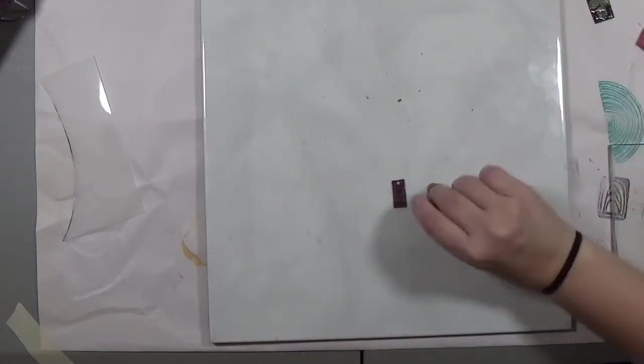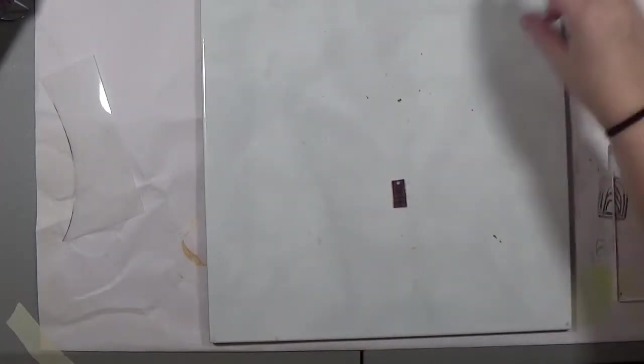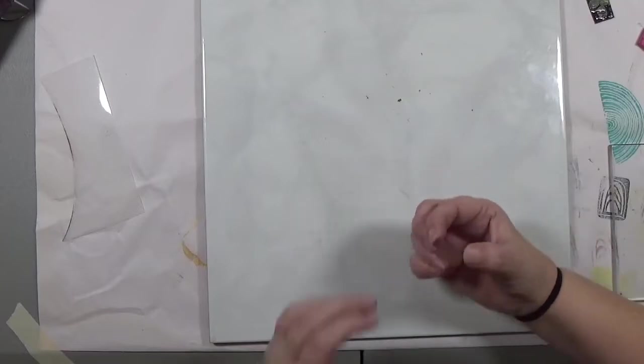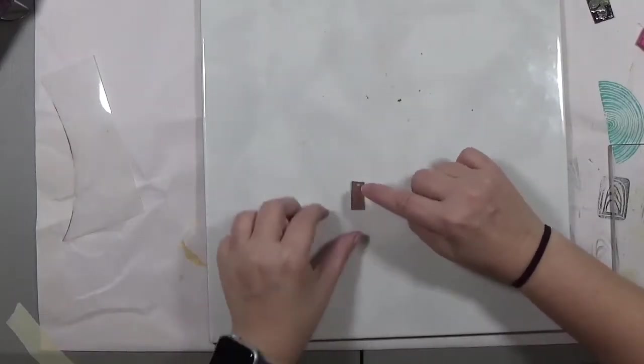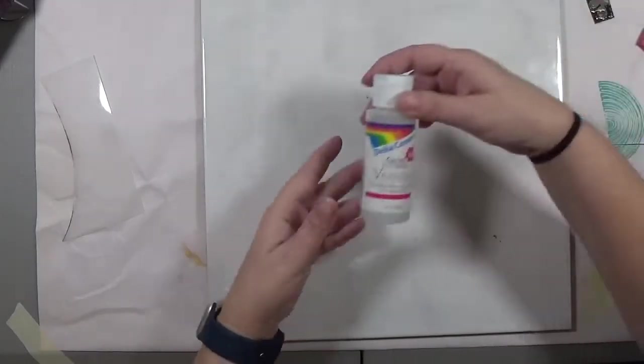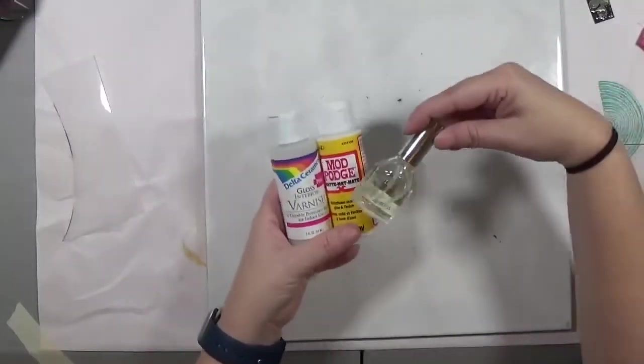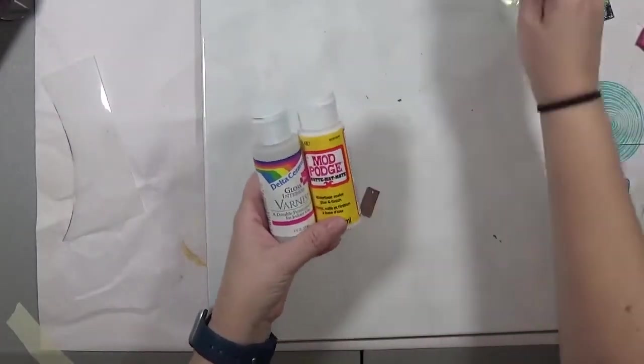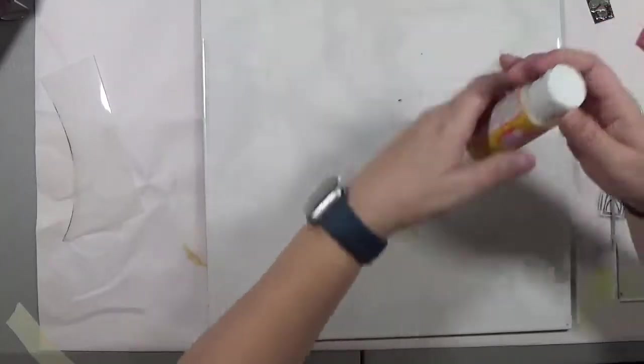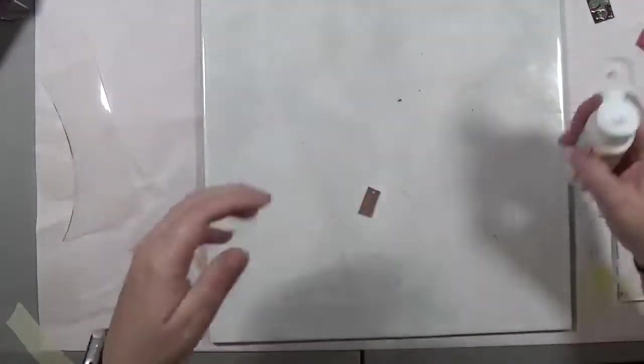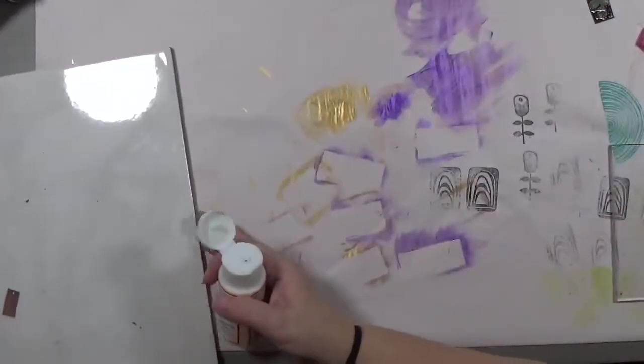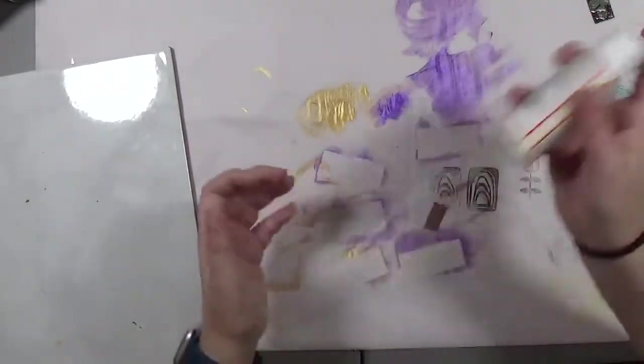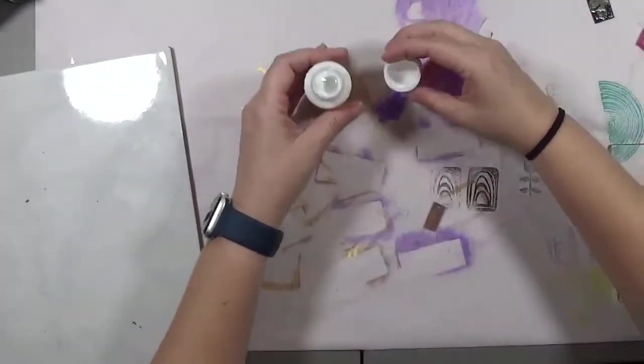So that's pretty much it for using stamps on shrink plastic. I am going to show you some pictures. Oftentimes I like to seal these. Now there's a lot of different things, you can use a Mod Podge or some kind of varnish or even nail polish, clear nail polish to seal these. For this one I'm just going to seal the painted side with a little bit of Mod Podge.